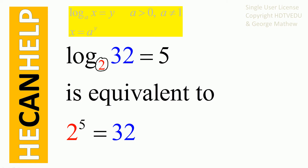So what is the base? 2. Take the base out. What is the number we are trying to express? We are trying to express the number 32 as powers of 2. So 2 to the power of 5 is equal to 32. We are writing the number 32 as powers of 2.